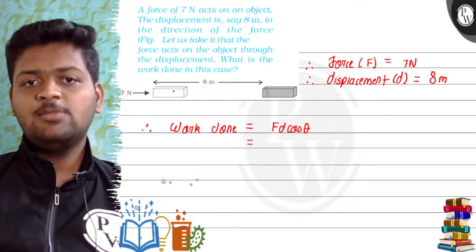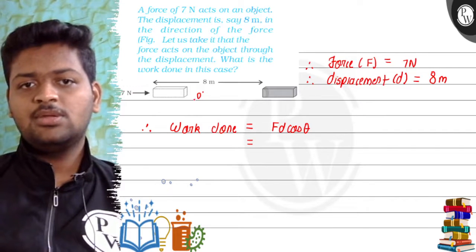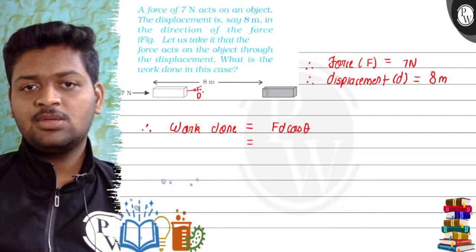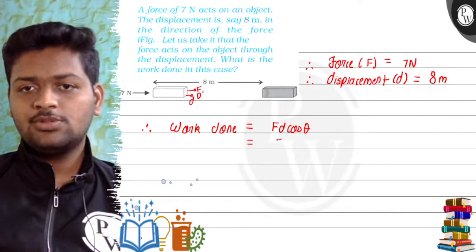Now, we know the angle between force and displacement is 0 degree. Force is also in this direction and displacement is also in this direction. So cos 0 degree is 1.